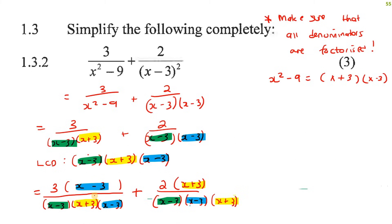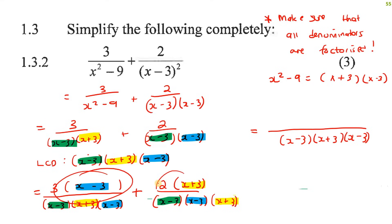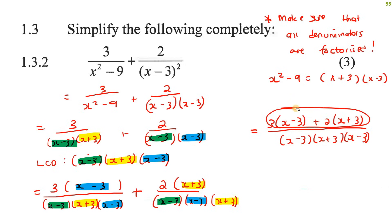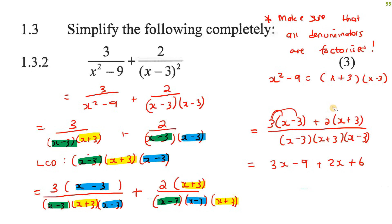Because these denominators are now the same, we can put everything together over one denominator. It's going to be 3 bracket (x minus 3) plus 2 bracket (x plus 3). Don't cancel these out because we have more than one term at the top — when you have more than one term, you can't cancel. We leave the denominator in bracket form, but we multiply out the numerator brackets. That gives us 3x minus 9 plus 2x plus 6.